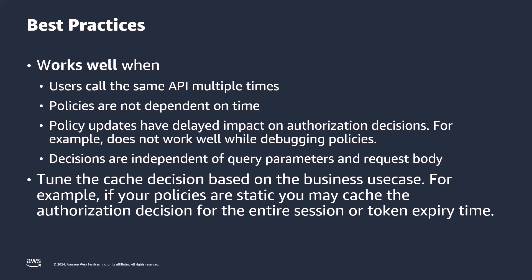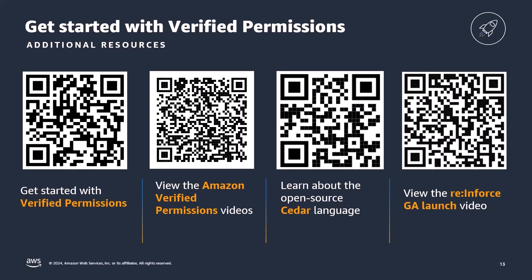A common question from customers is: what is the ideal TTL for my cache? That depends a lot on your application and business use case. For example, if your policies are static, you may cache authorization decisions for the entire session or token expiry time. I've put up a set of QR codes to help you get started with the service — log into the AWS console and head to Verified Permissions. Thank you for spending the time with me to learn more about authorization and protecting Amazon API Gateway APIs with Verified Permissions.